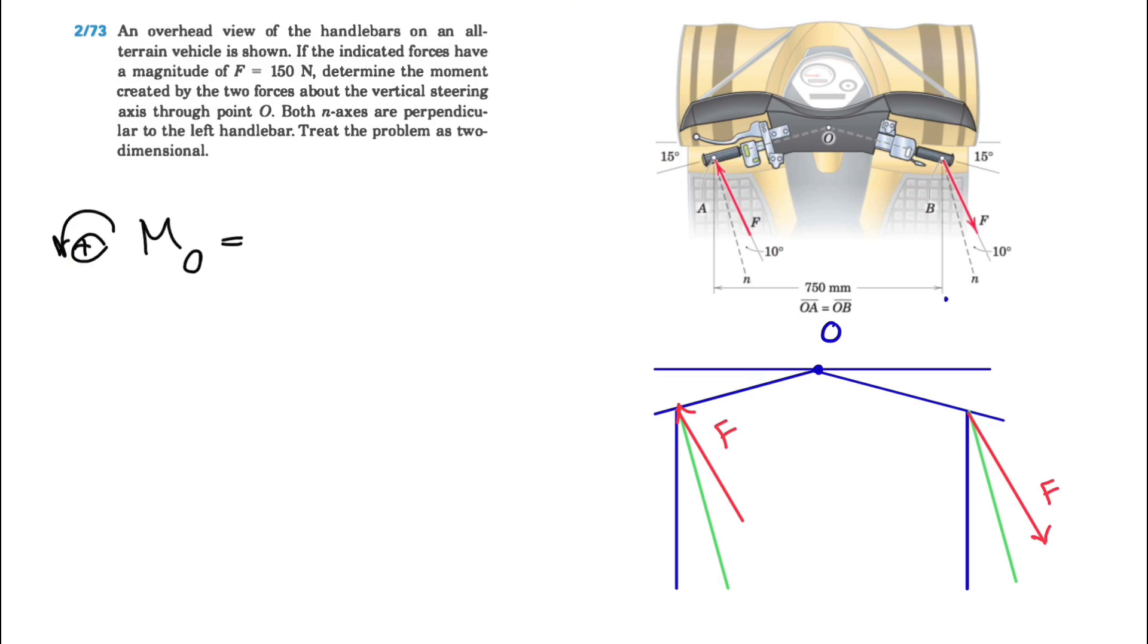We're interested in finding the moment about point O, and we'll call counterclockwise positive as always. But before that, let's figure out some angles. We know here we have 15 degrees, and same on the other side, and the length from here to here is 750 millimeters.